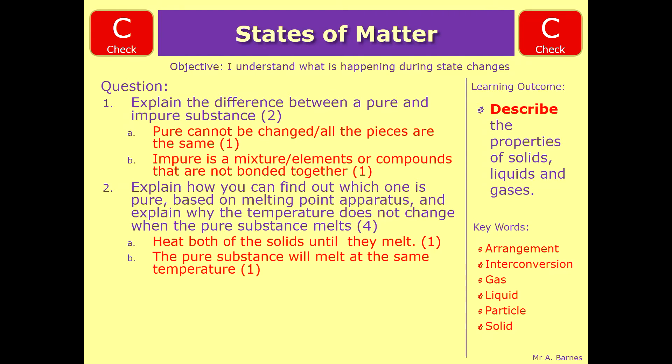For B, the pure substance will melt at the same temperature. So talking about the fact that if it's pure, that melting point range will be very small. For impure or your mixture, it will melt over a larger range.